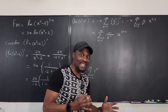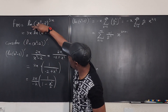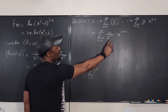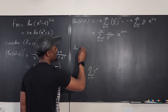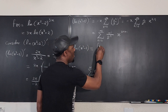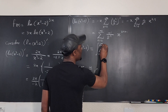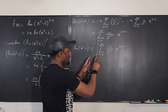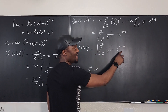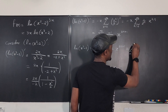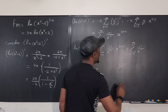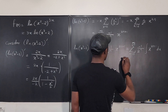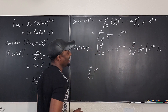But remember, we're not looking for the derivative — we want the original function. We still have 3x to bring back. To recover ln(x² - 2), we integrate both sides. The right-hand side becomes the integral of the sum from n=0 to infinity of (-1/2^n) · x^(2n+1) dx, which we integrate term by term.